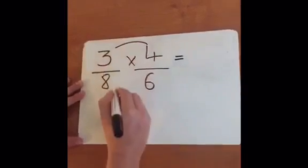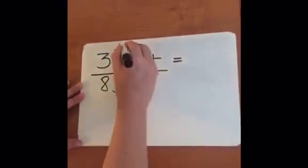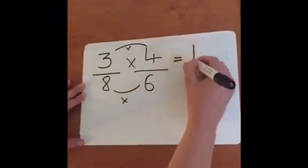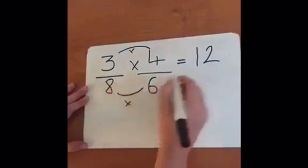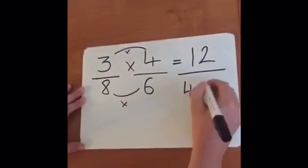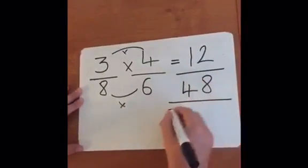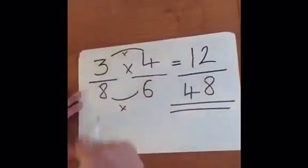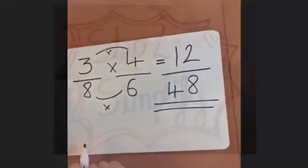The first thing she's going to do is multiply the numerators: 3 times 4, which is 12. Then she's going to multiply the denominators: 8 times 6, which is 48. Okay, well done Miss Sheldon, and now on to step two: simplify.